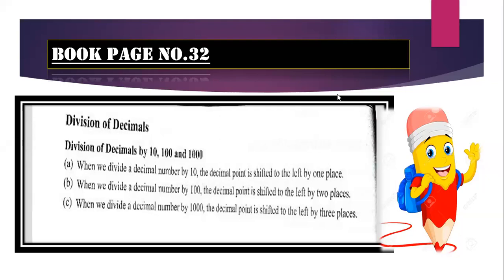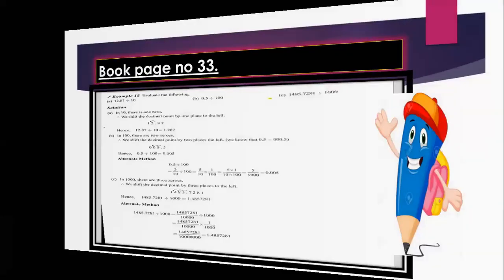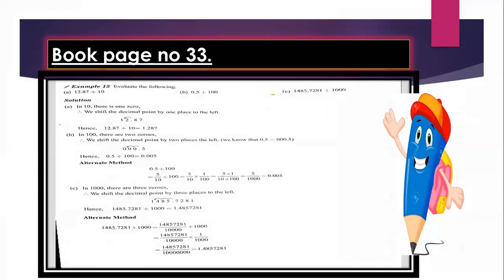As 10 has one zero, the decimal place shifts one place to the left. 100 has two zeros, so two places to the left, and 1000 has three zeros, so we shift three places to the left. Now, on page number 33, we are going to look at an example.